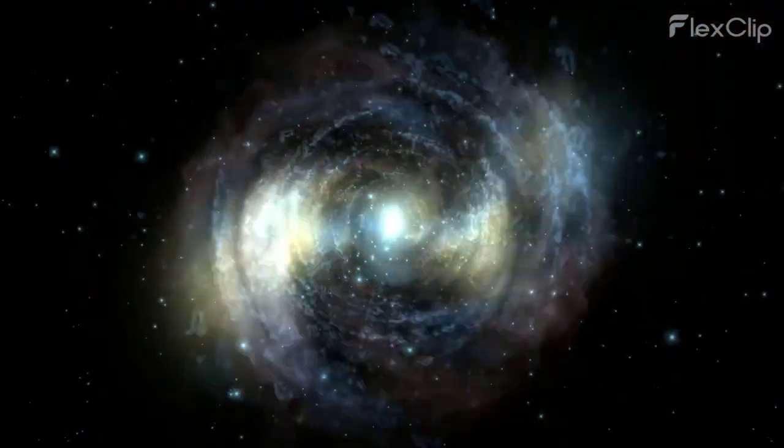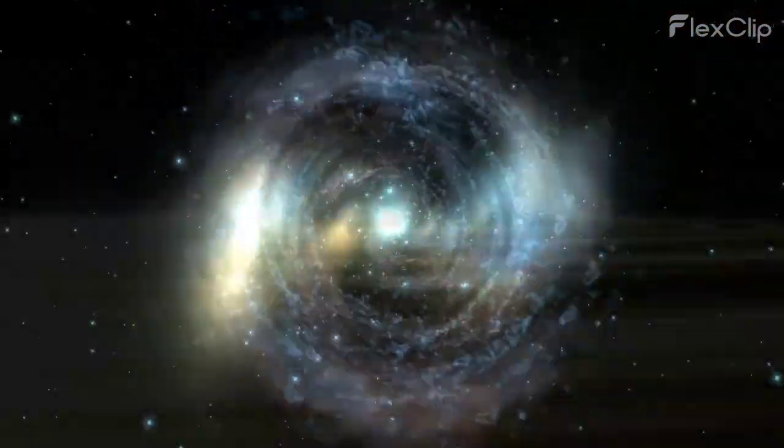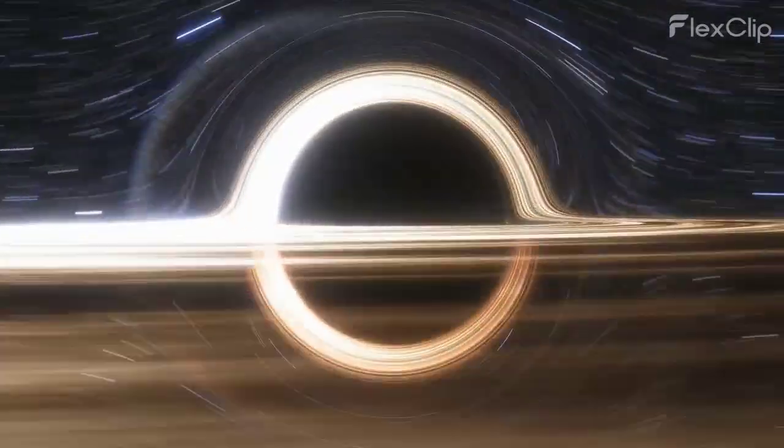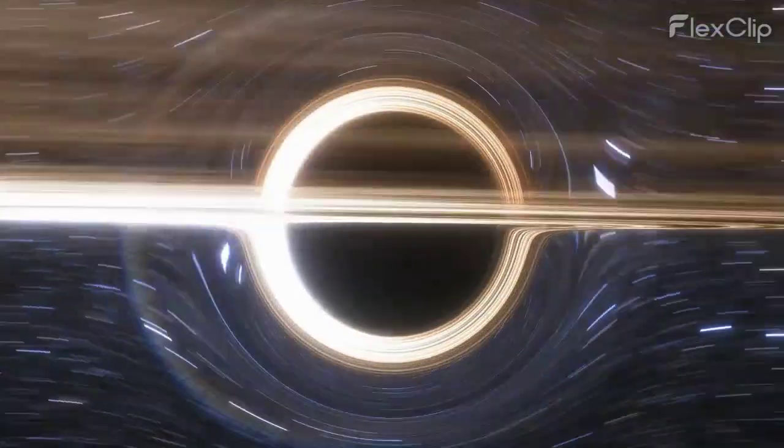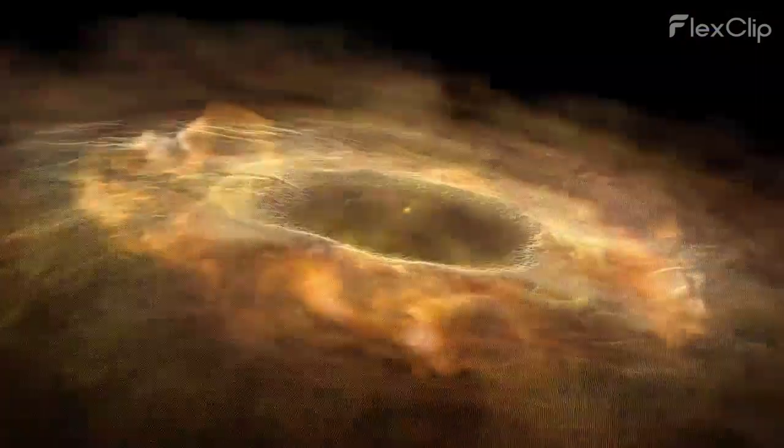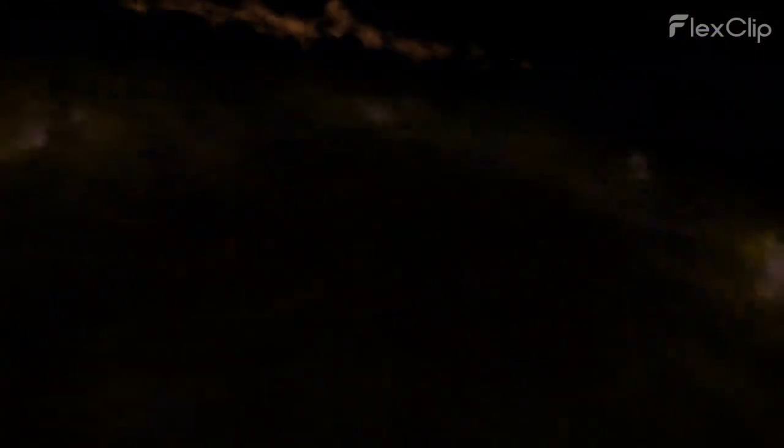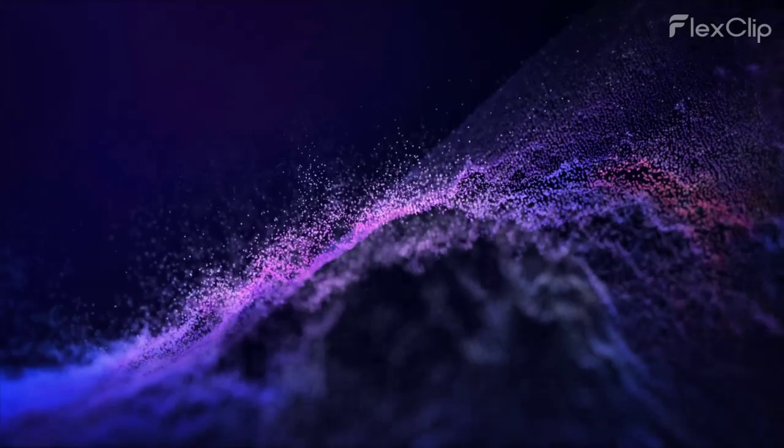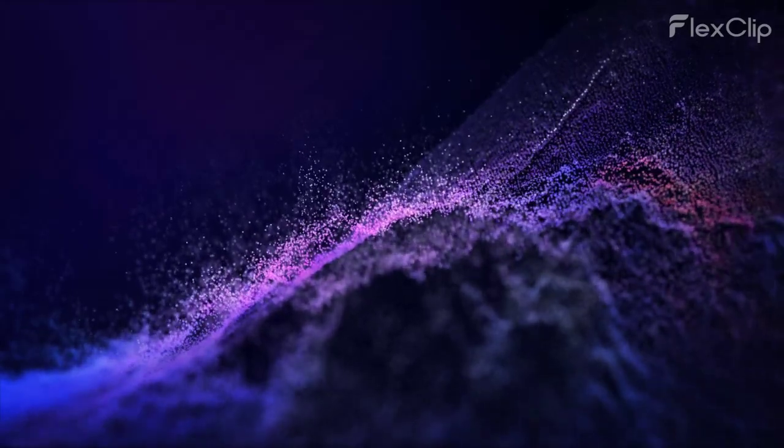Space-time is not static but can be curved by the presence of matter and energy. The theory of general relativity describes how the distribution of mass and energy determines the curvature of space-time, which, in turn, influences the motion of objects within it. Gravitational forces are a result of objects moving along the curved paths in space-time created by this curvature.